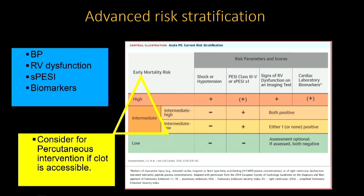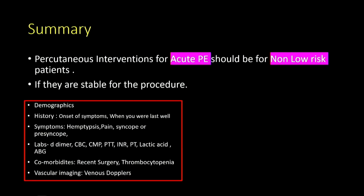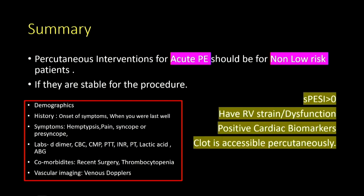To risk stratify: assess patient hemodynamics, RV function, S-PESI score, and biomarkers. If the patient is at high or intermediate risk, consider percutaneous catheter-directed intervention if the clot is intervenable. RV must be enlarged and troponins positive to qualify as high intermediate risk. In summary, acute PE patients who are not low-risk should be considered for percutaneous intervention if they are stable for the procedure, have an S-PESI score of one or more, have RV strain and positive biomarkers, and the clot is percutaneously accessible. It's also critical to consider demographics, symptom onset, labs, lactic acid levels, and DIC status, as all these predict intervention success.